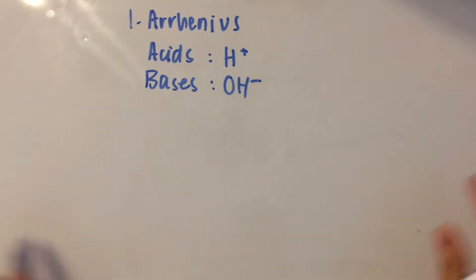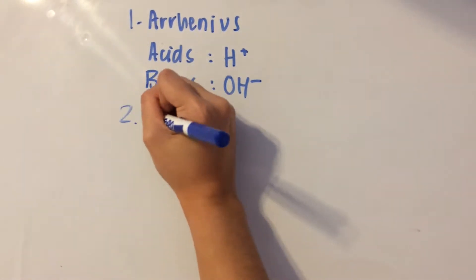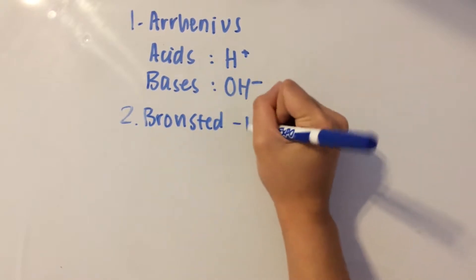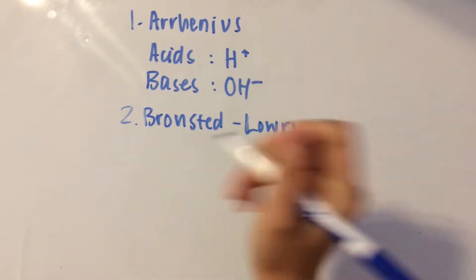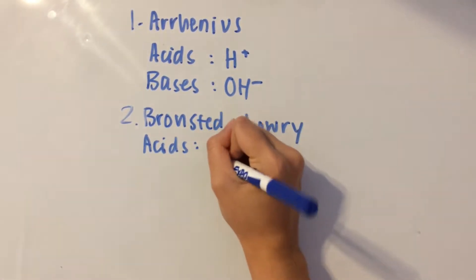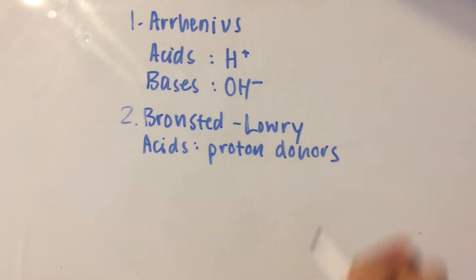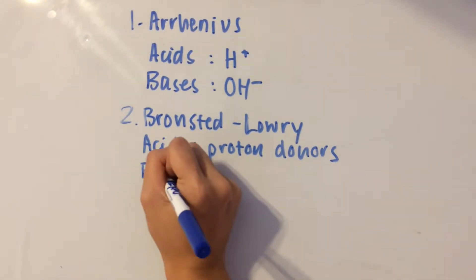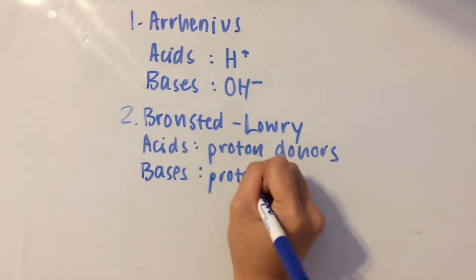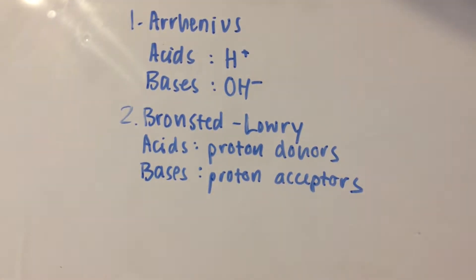You'll see in a minute why this theory isn't as accepted as the Bronsted-Lowry theory for acids and bases. What Bronsted and Lowry said was that acids are proton donors, so they donate protons into the solution, but bases are proton acceptors. So they accept the H plus in the solution.